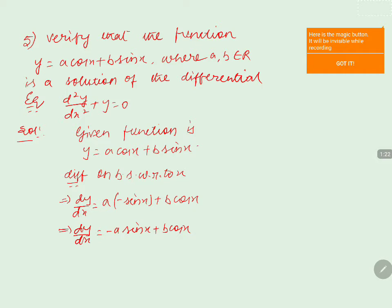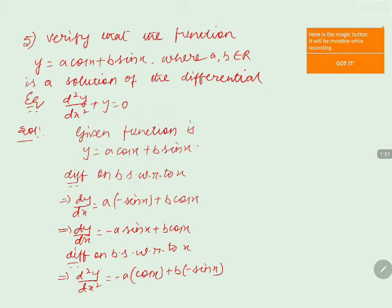In order to get d²y/dx², we differentiate both sides again with respect to x. Then d²y/dx² = −a·cos(x) − b·sin(x), since the differentiation of sin(x) is cos(x) and cos(x) is −sin(x).